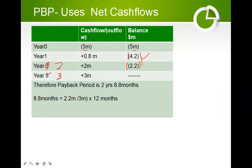We have a balance of 2.2 million yet to be recovered. Then in year three we received 3 million. The 3 million covers the 2.2 million, so we put a dash here because the full balance of 2.2 has been covered. So our payback period is at least two years, but there are some additional months to account for.